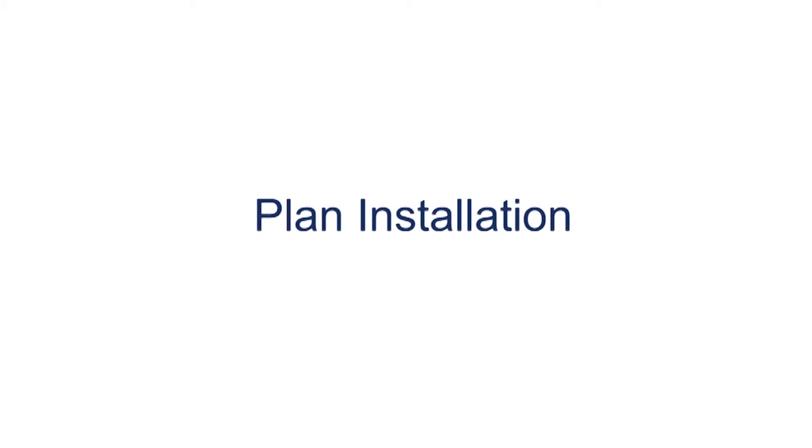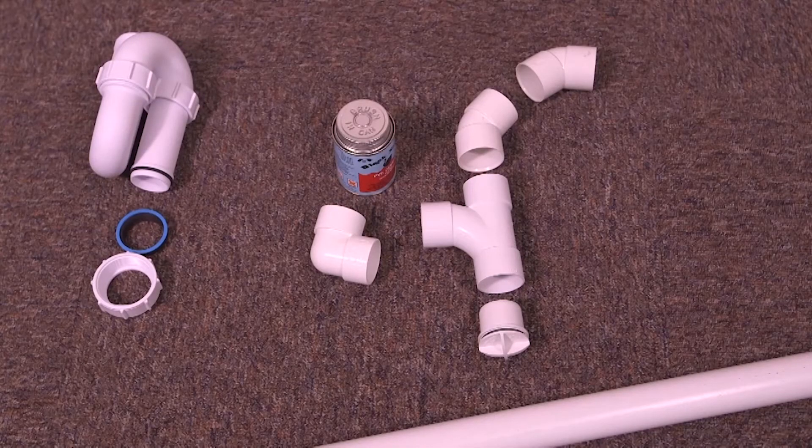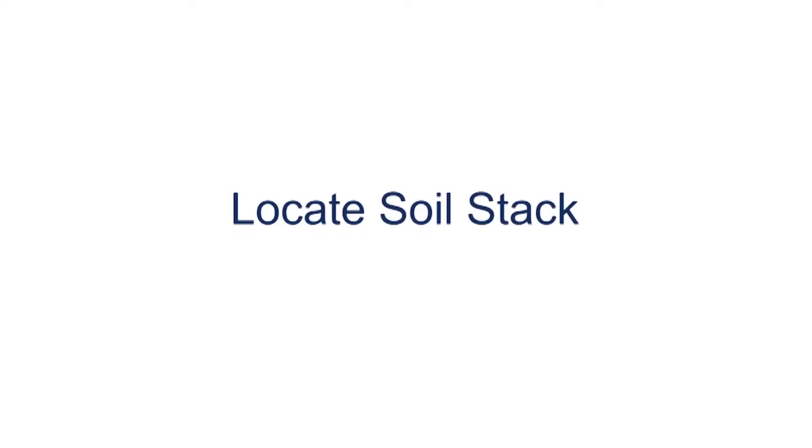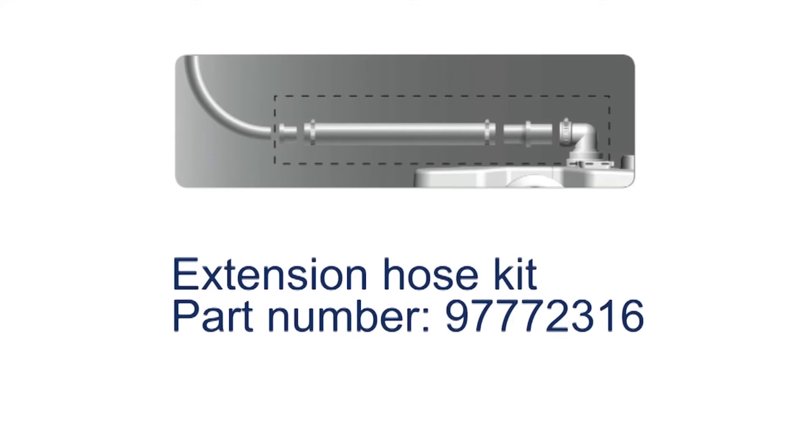When planning the installation, make sure you have all the necessary pipes, connections and tools ready. Identify where the soil stack that you should connect to is located. If the Solo Lift 2 is a replacement for an existing product where the outlet to the soil stack is already installed but on the other side of the outlet to the Solo Lift 2, then the extension hose kit, part number 97772316 will be required.